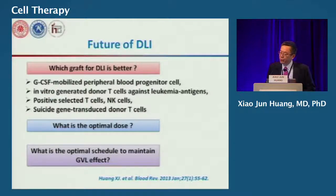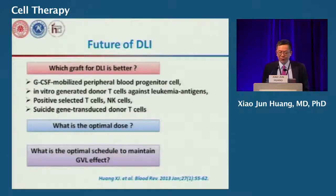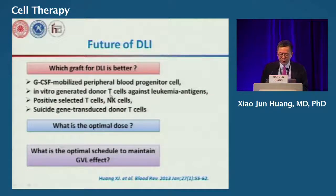What about the future of donor lymphocyte infusion? Although progress has been made by modifying DLI to be safer for prophylactic or preemptive use, many questions remain. Which graft is better: G-CSF mobilized peripheral blood, in-vitro expanded donor T-cells against leukemia antigens, positively selected T-cells, or NK cells?